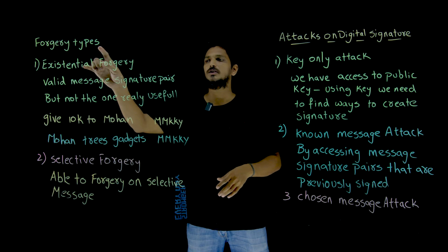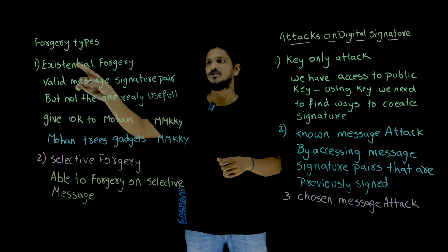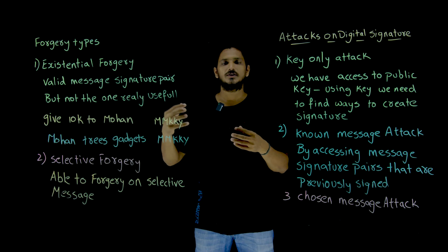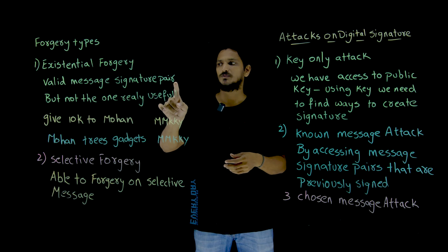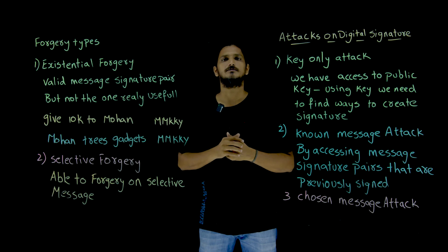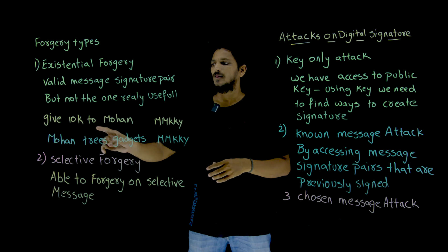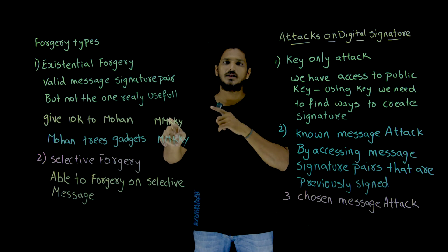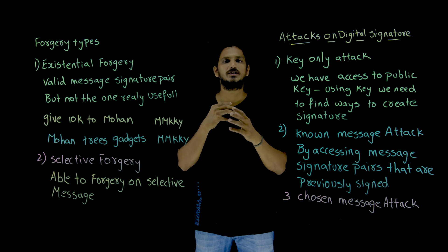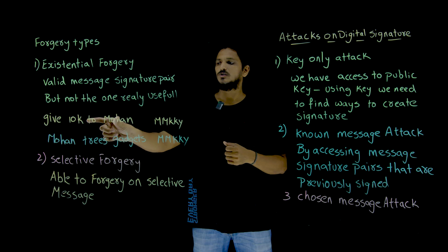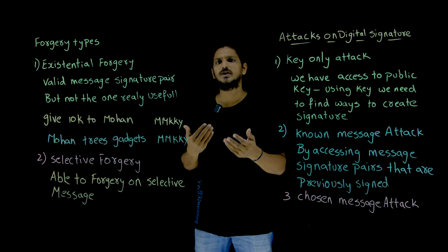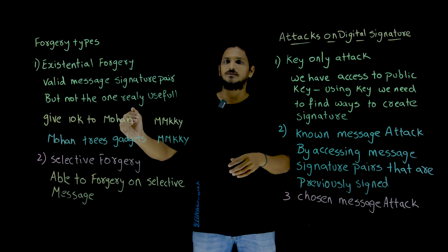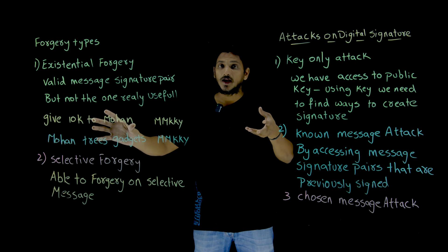Now coming to forgery types — there are two types: existential forgery and selective forgery. Existential forgery means you have identified a valid message-signature pair, but not one that is really useful. For example: the actual message is 'give 10k to Mohan' and the owner generates a signature 'mmkky' for this message. Somehow, using some technique, you identify another message that gives the same signature.